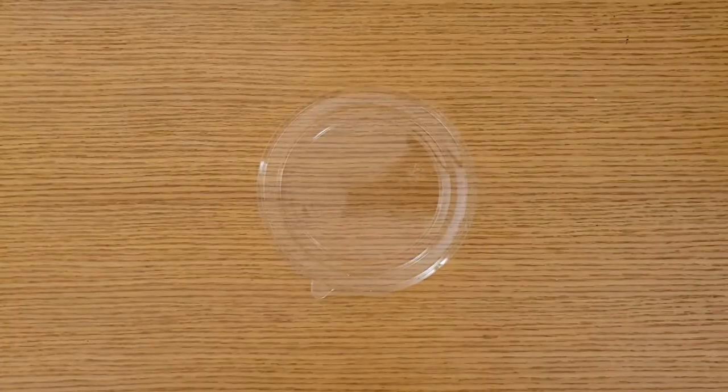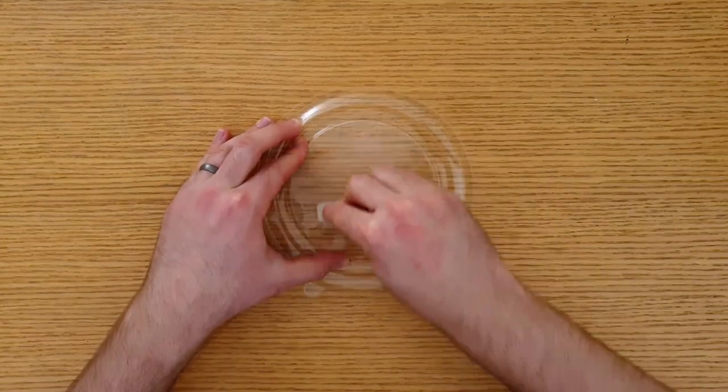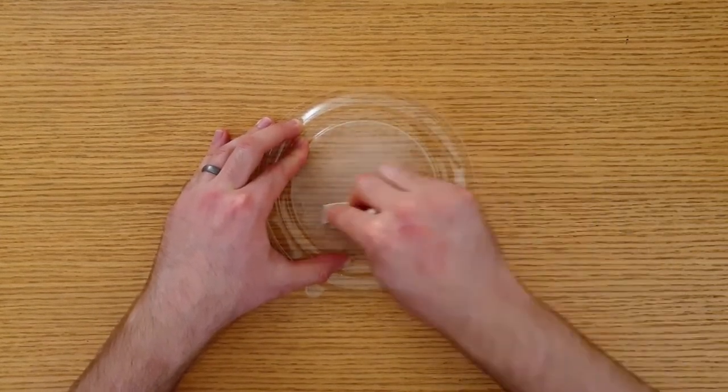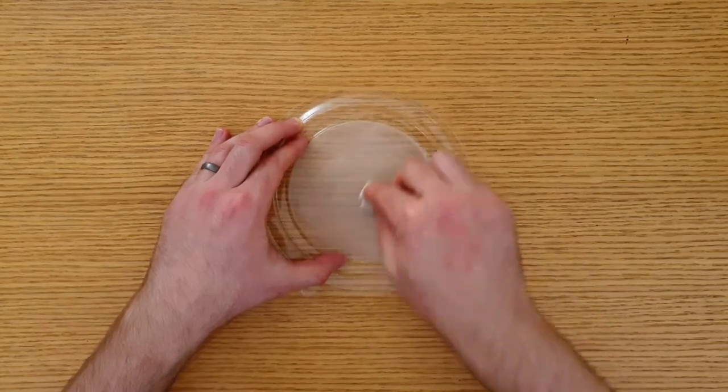If you're using recycled polystyrene, give one side a light sand with some fine sandpaper. The shrinking plastic will already come with one rough side.